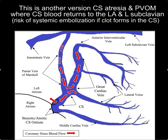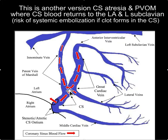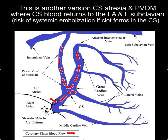There's another version of CS atresia with patent vein of Marshall where the blood return is both to the left atrium and to the left subclavian. In this case, there's a risk of systemic embolization if clot forms in the coronary sinus.